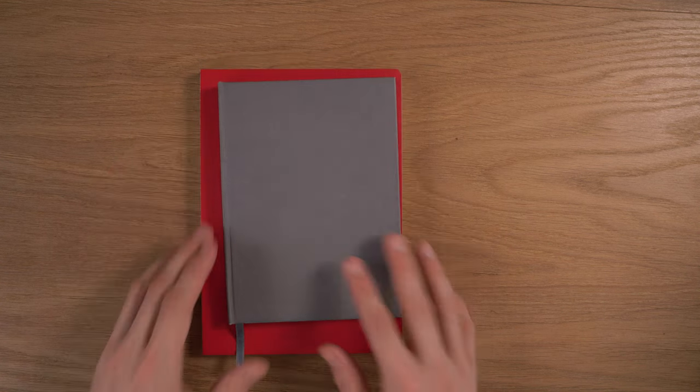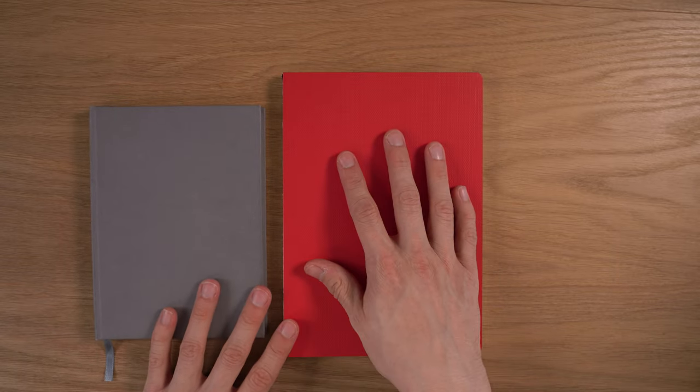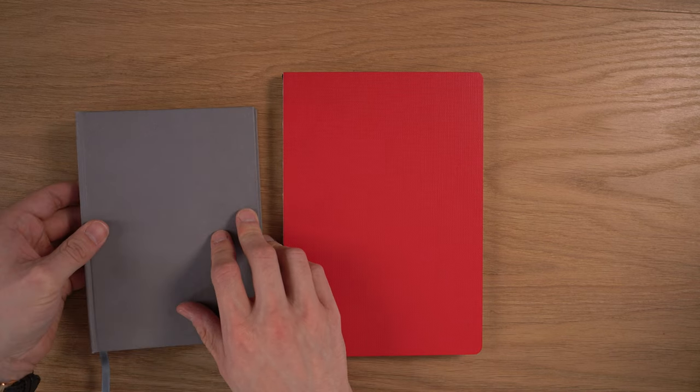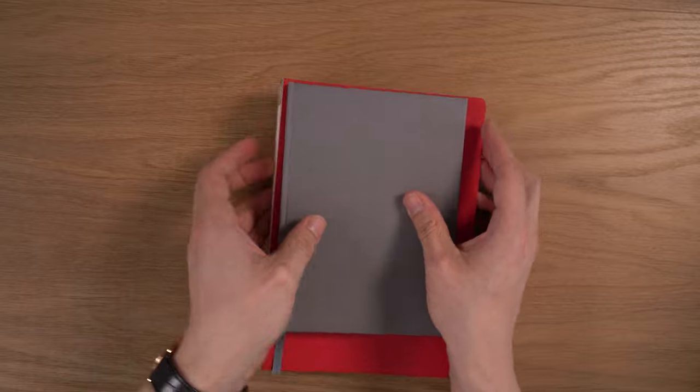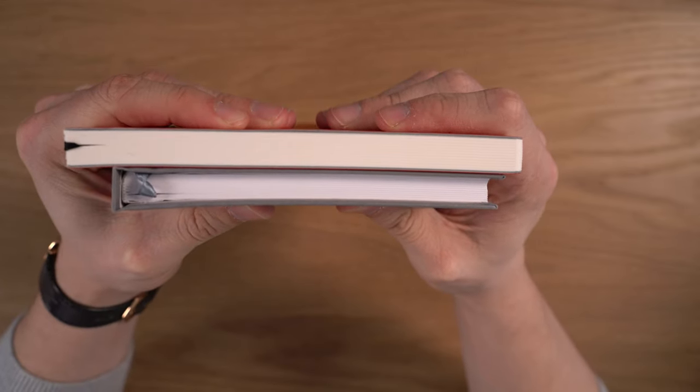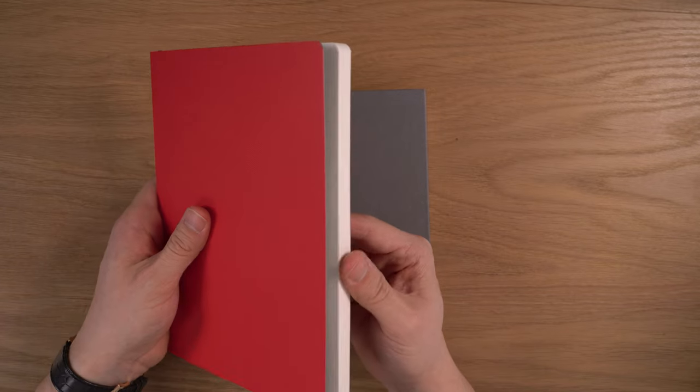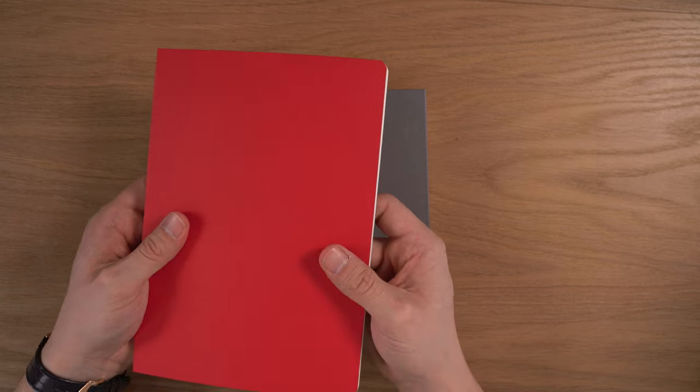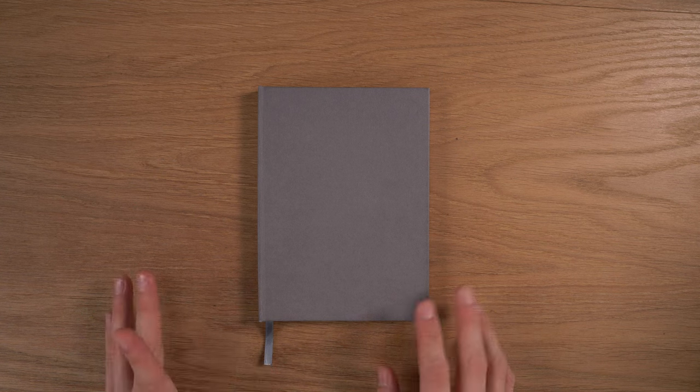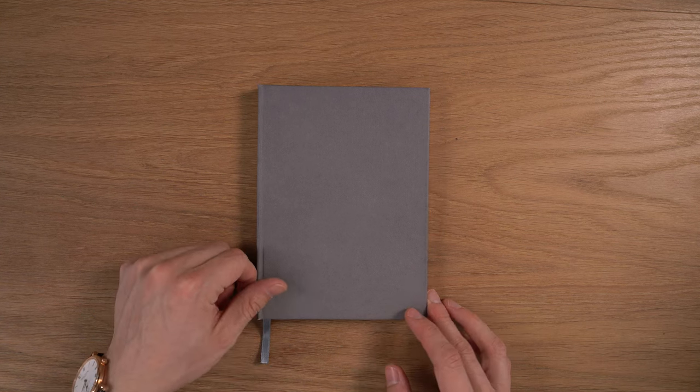One thing I'll also point out is compared to the Mitsubishi Bank Paper, which is 88 GSM, the paper in this notebook, the blocker paper, is 80 GSM, and in terms of thickness, they're basically the same thickness. You get a hardcover that's really the same size as that standard paper softcover notebook in terms of thickness, which is great. Because this is blocker paper, it's actually more opaque than that Mitsubishi Bank Paper.